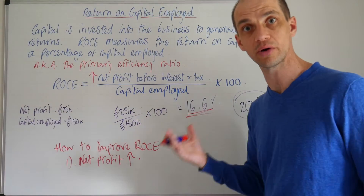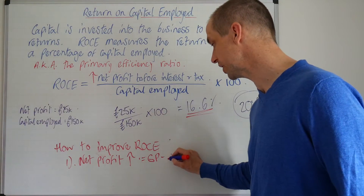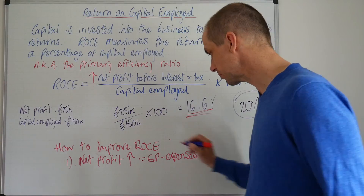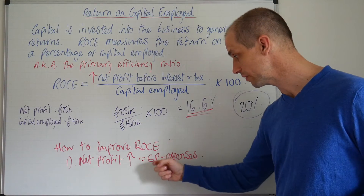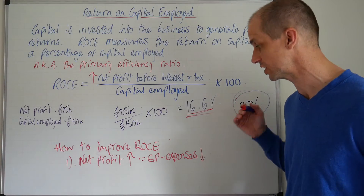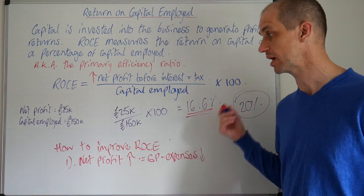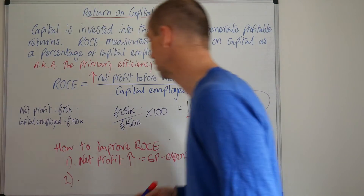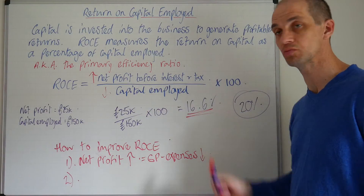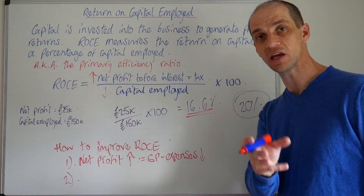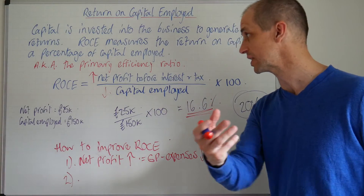If you're able to cut down those expenses, you'll improve overall net profit. If you're able to increase gross profit by reducing the cost of sales, likewise you will see an improvement. Number two: the alternative approach is to sell off any unused assets and use assets and capital more efficiently. Ensure that idle money balances in bank accounts or idle machinery is sold off and turned into cash so that you can reinvest that money into the business.